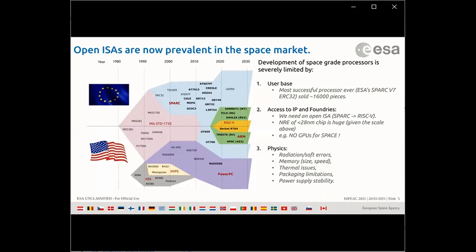There is still Power PC in the US market but it's fading. What do we need for a future space processor? The quest is to bring more functionality in a reduced component count, following the system-on-chip trend. More processing power is needed because we will have payload applications, but we are limited by a limited user base. The most successful space processor, the ERC32, the first of the SPARC family, sold on the order of 16,000 pieces — not comparable to anything in the commercial market.